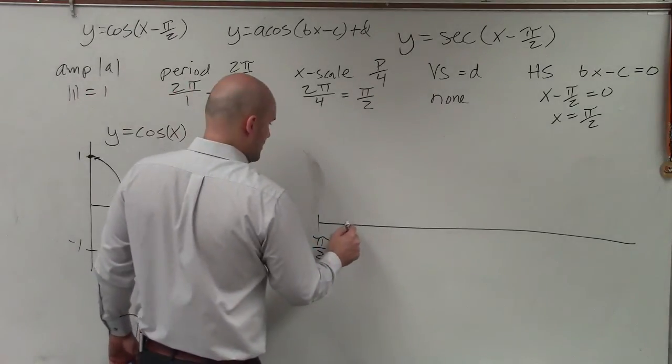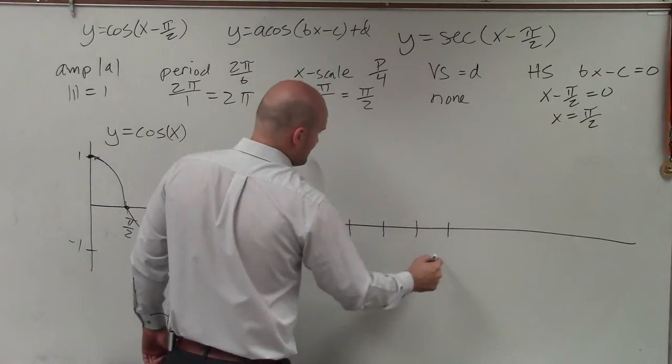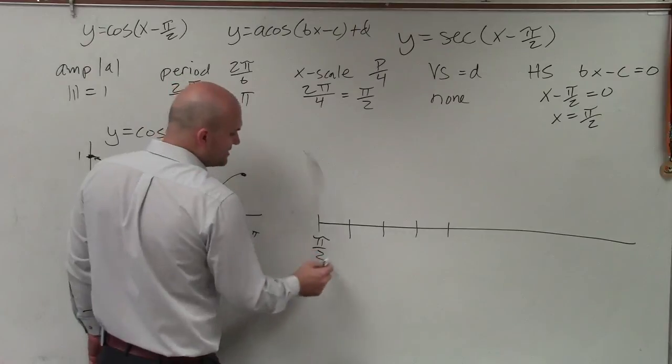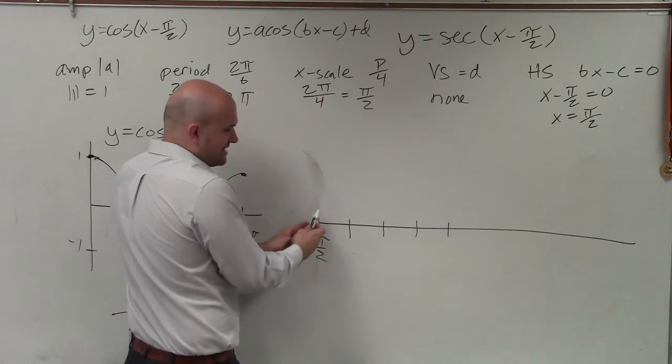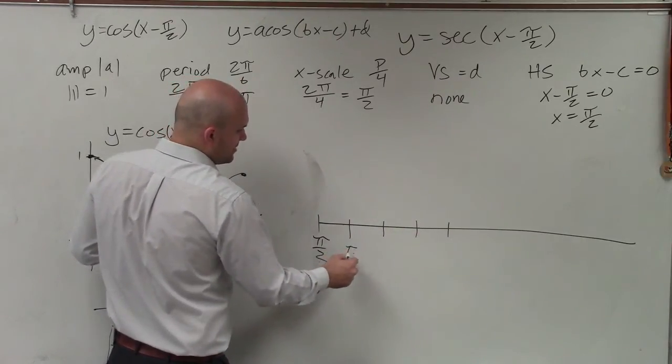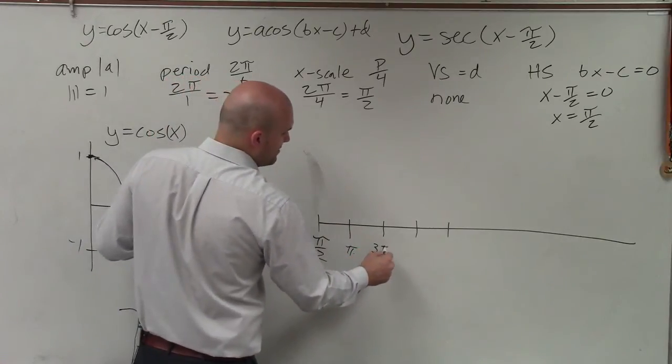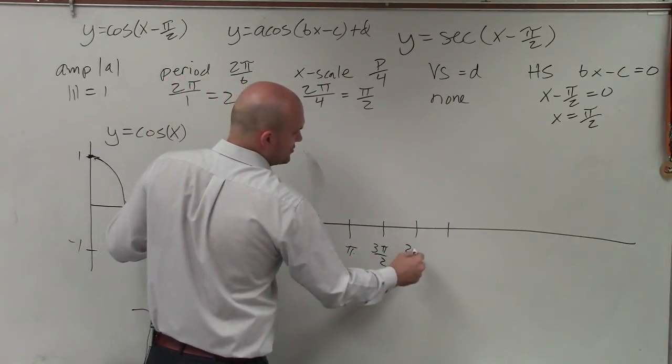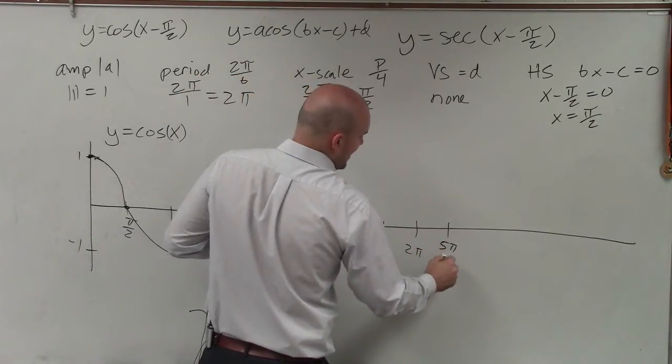So now, to get to my next point, the reason why we have the x scale is that is the distance between each one of those important points. So if that's pi halves, this is going to be pi, because pi halves plus pi halves equals pi. This would be 3 pi halves. This would be 2 pi. And this would be 5 pi halves.